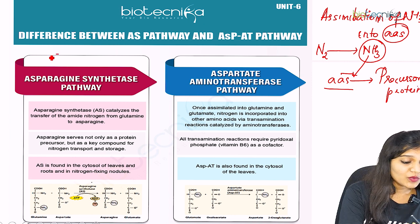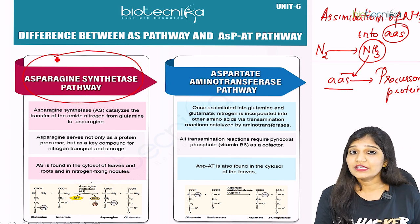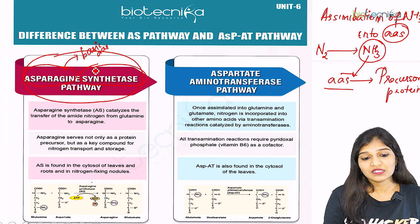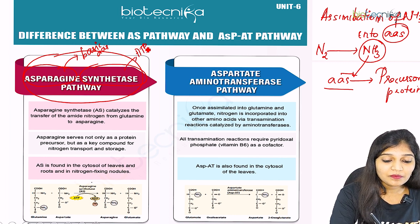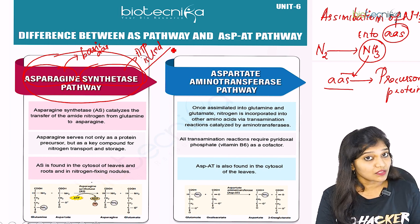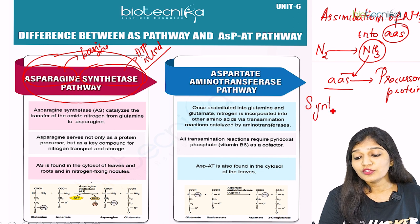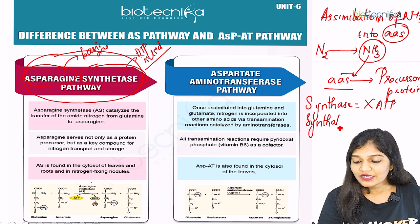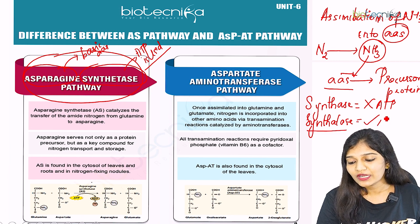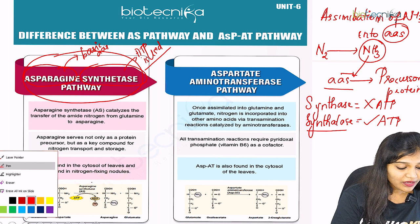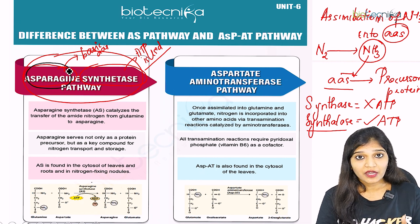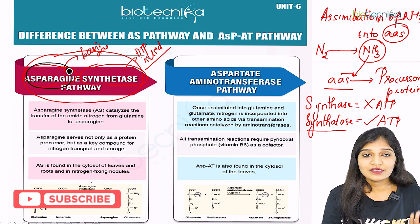The first pathway is the asparagine synthetase pathway. We need to understand what asparagine is — it is a basic amino acid. We also need to understand the difference between synthetase and synthase: synthetase utilizes ATP, whereas synthase does not require ATP. So in the asparagine synthetase pathway, we will be studying ATP utilization — asparagine is synthesized by utilizing ATP.